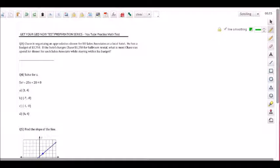Alright, so let's jump into number three. Chase is organizing an appreciation dinner for 50 sales associates at a local hotel. He has a budget of $3,750. If the hotel charges Chase $1,250 for ballroom rental, what is the most Chase can spend for dinner for each sales associate while staying within his budget?